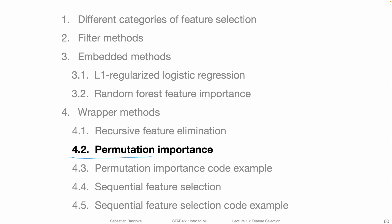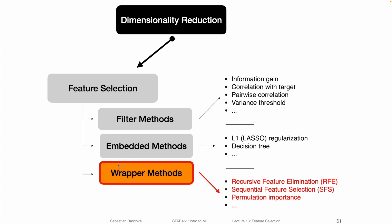In this video, we are going to talk about permutation importance. Permutation importance is part of the wrapper methods for feature selection that we started discussing in the last video. Wrapper methods involve a model for doing the feature selection or feature importance estimation. Previously, we have seen recursive feature elimination as one example. This lecture, we will take a look at permutation importance.